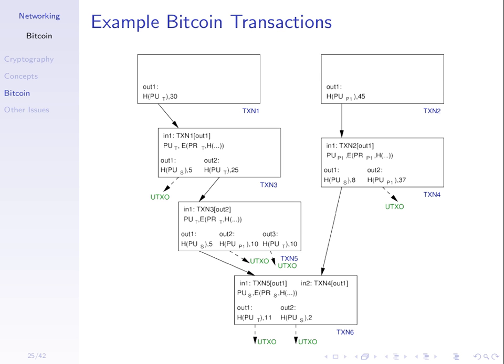Let's recap. We're getting into the technical detail of the structure of each transaction. The input refers to the ID of the previous transaction — TXN1 is the input to TXN3. We may have multiple outputs; in TXN5 for example there are three outputs. The input identifies where the Bitcoin comes from, and the outputs identify who it goes to and how much.